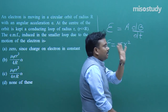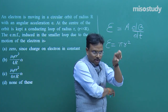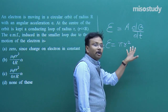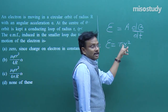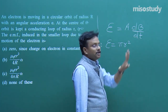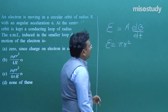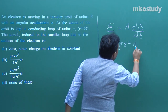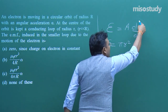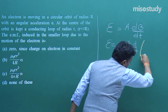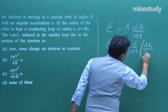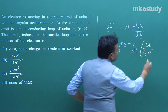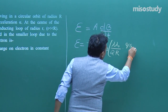Now, what about dB/dt? Try to recall the formula for the magnetic field produced at the center of a circular loop. I am using the direct result: if you have any confusion, please stop the video here, revise that formula, then restart. If you are regularly watching our videos, this has been properly explained. So: ε = πr² · d/dt [μ₀/(2R) · (eω/2π)]. B is changing, so this quantity is changing.